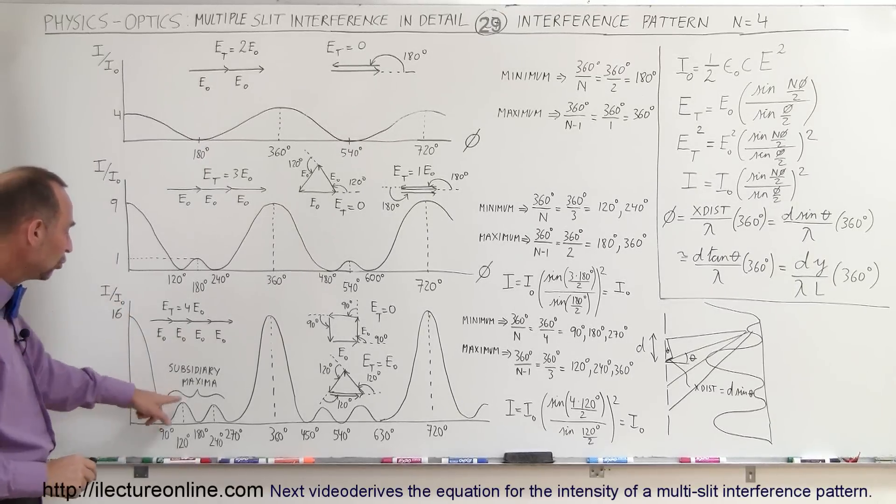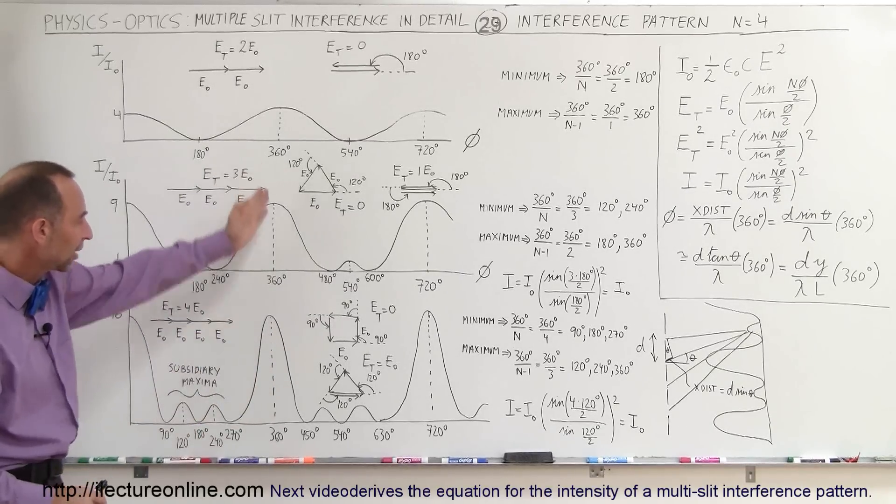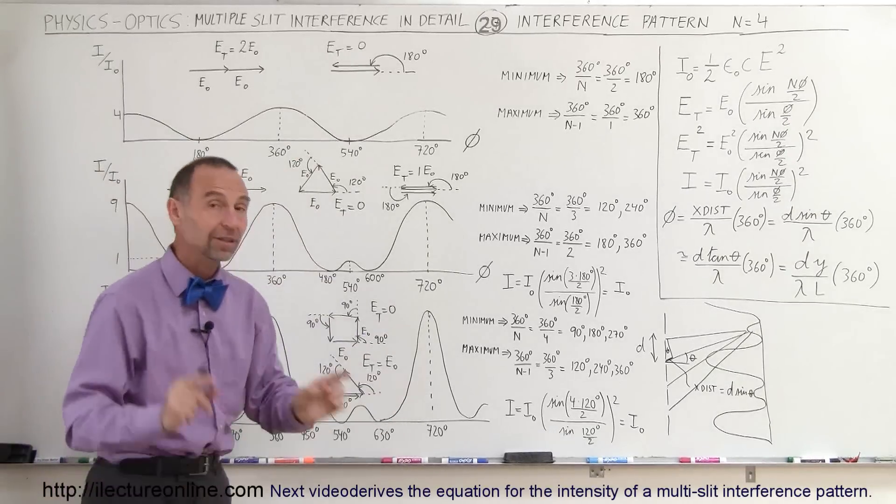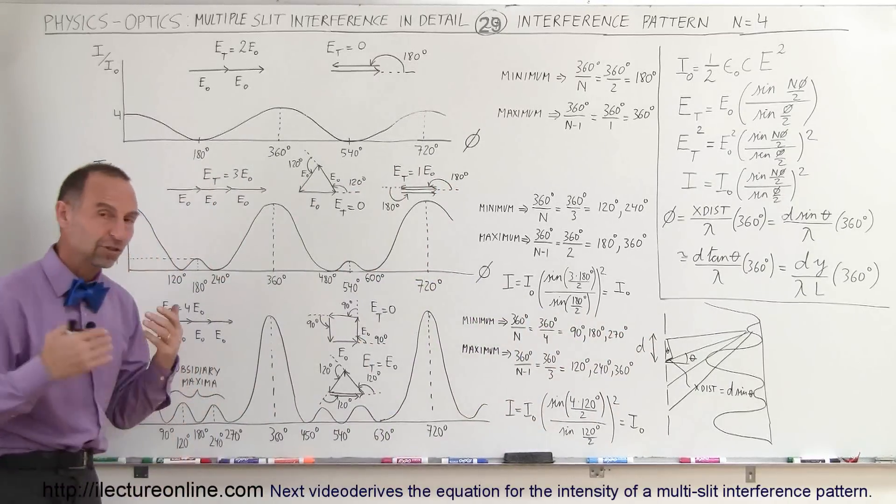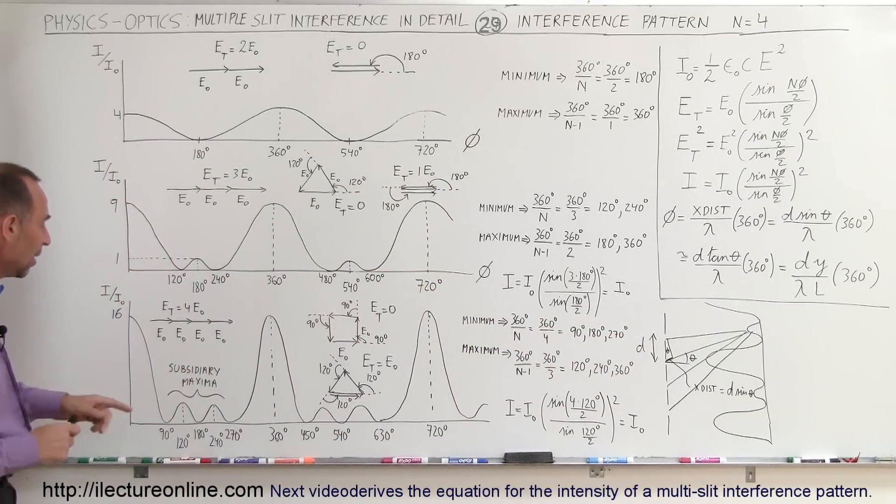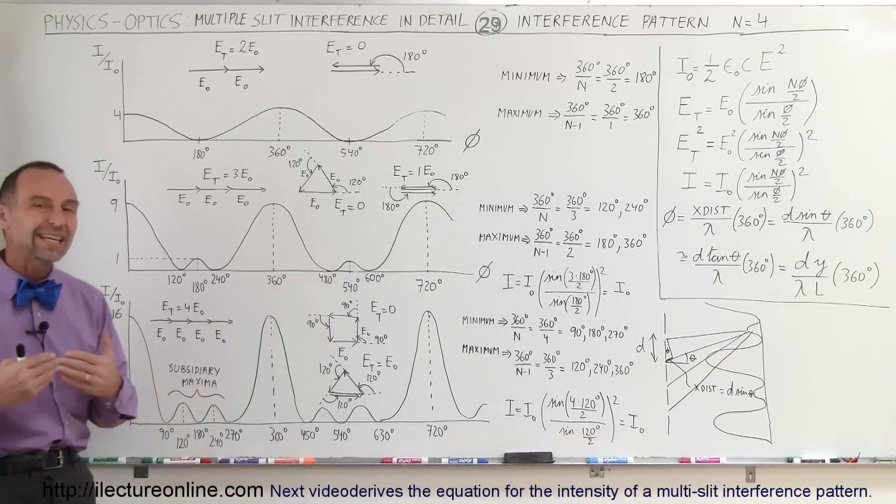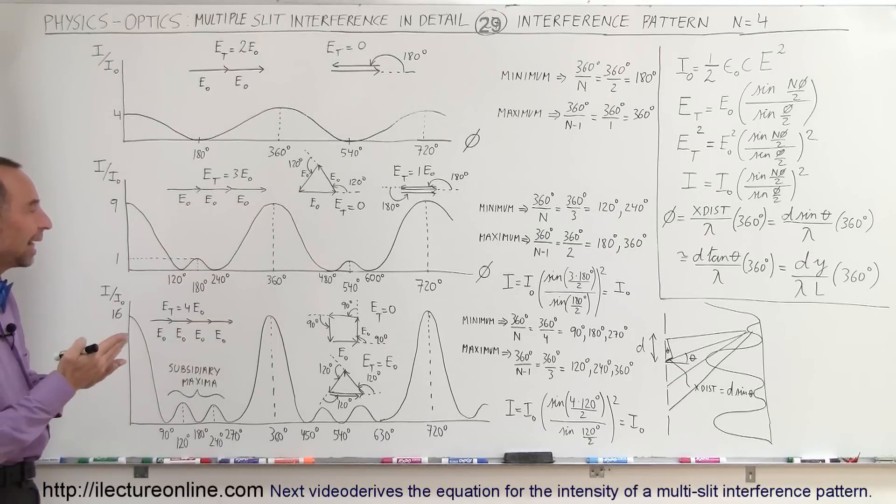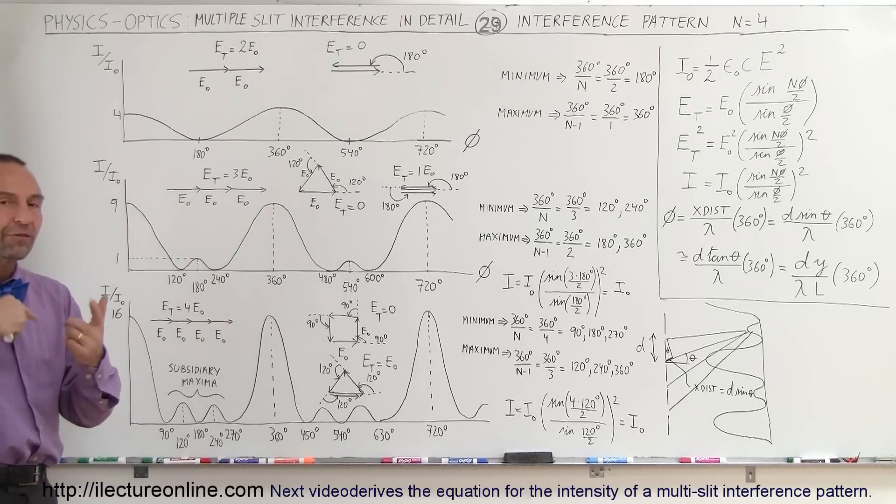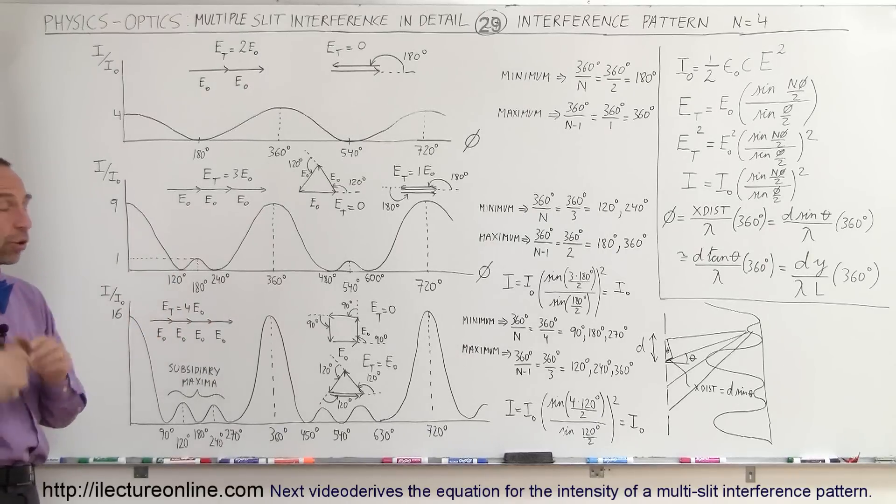Now notice that there are two small maxima before we get to the next large maxima. Notice that the maxima always occur at the same location, provided that the distance between the slits is the same, and of course that we use the same wavelength for the light. But notice now we have two small maxima. We call those subsidiary maxima. They're much smaller in intensity, and the reason is that a very small portion of the phasor survives when they all arrive at a particular location. Let me show you how that works.